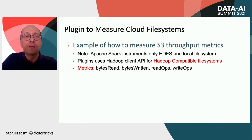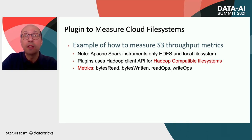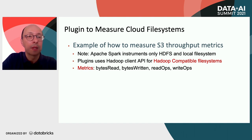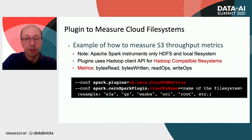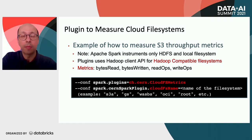Another plugin that you might find useful allows you to measure cloud file systems such as S3 or any other Hadoop compatible file system. The metrics reported are bytes read, bytes written, read ops, and write ops. This is how you can configure the plugin.